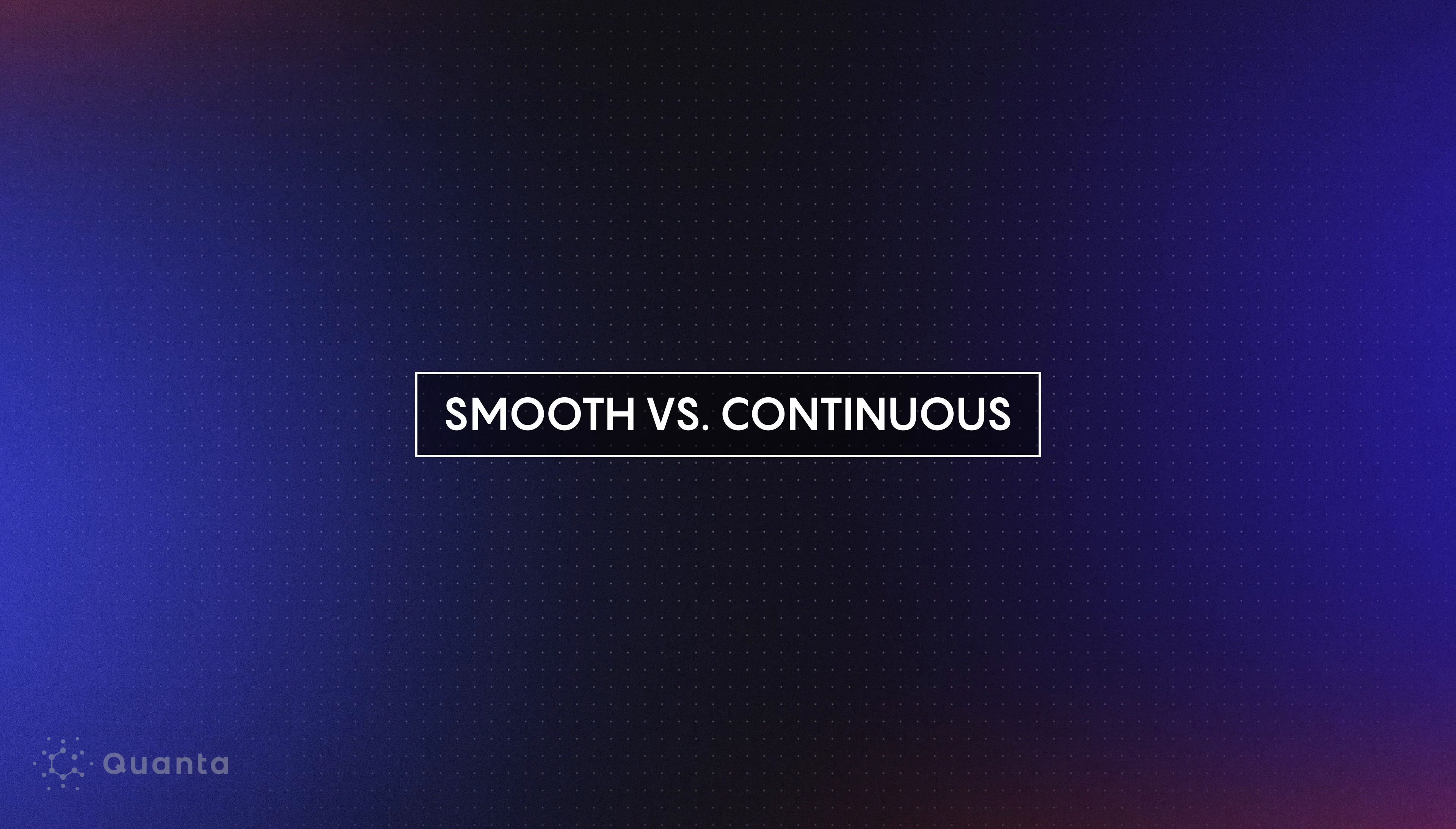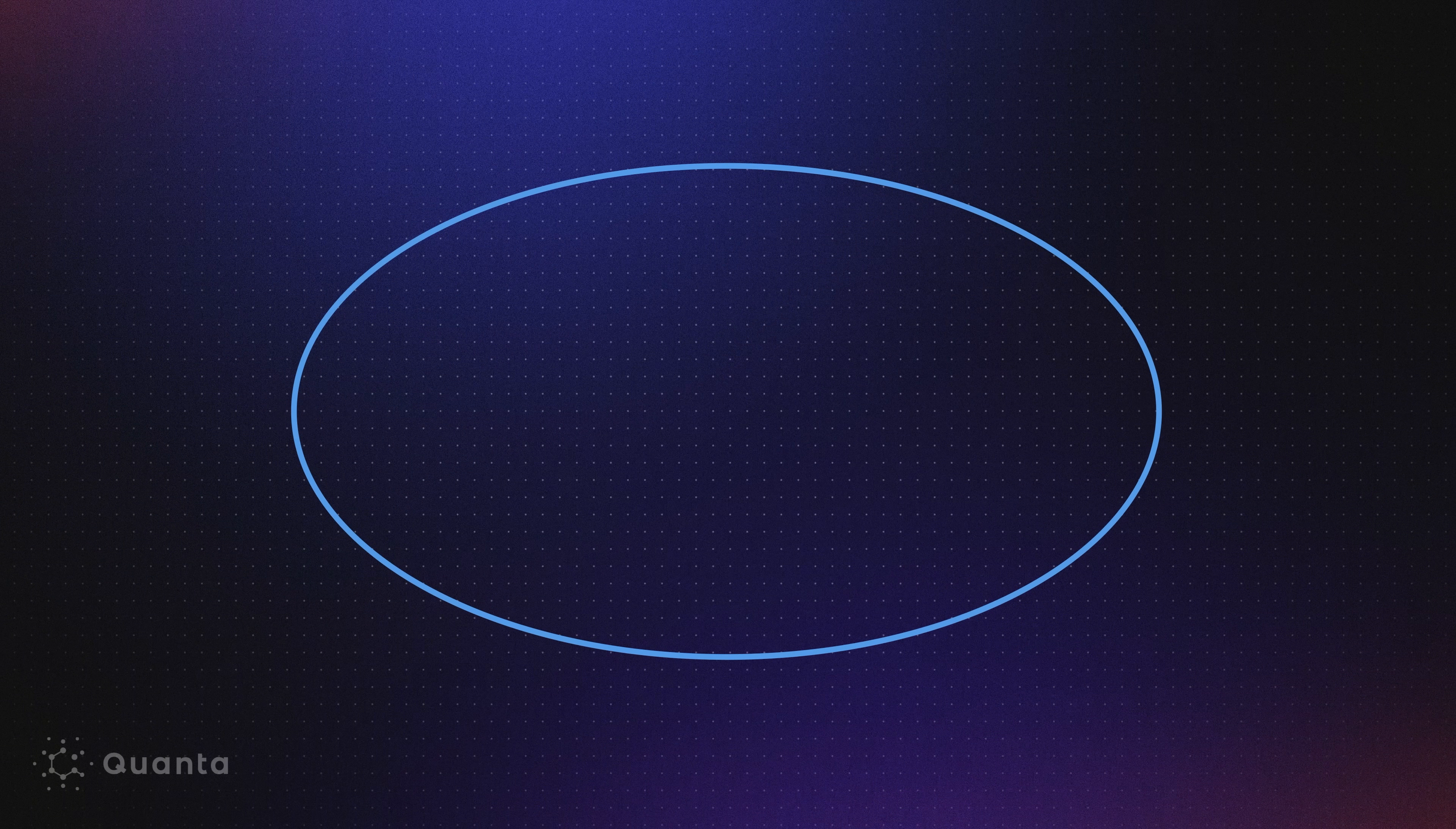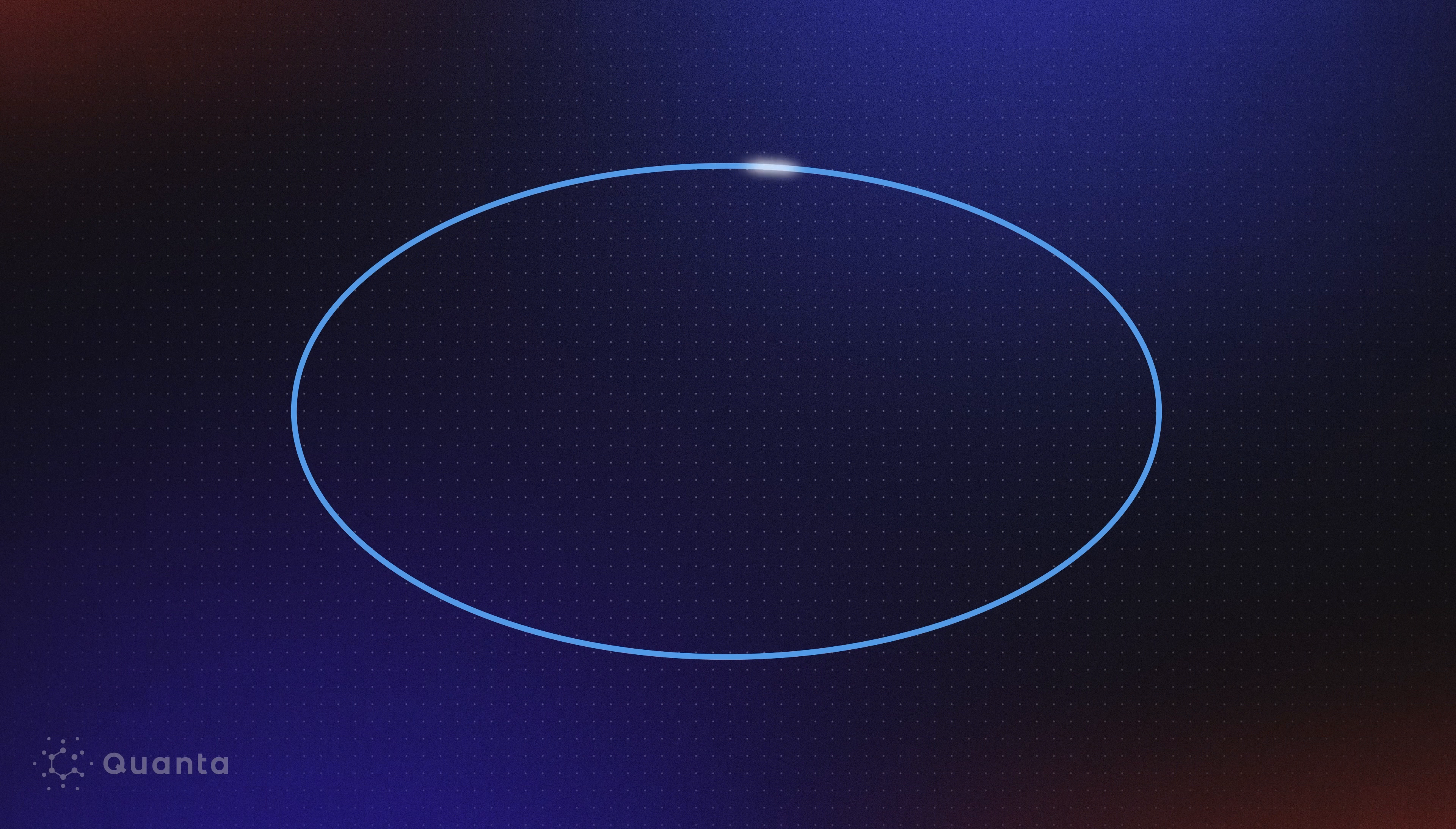The difference between smooth and continuous equivalence is easiest to imagine in really low dimensions. Think about a circle. A circle is smoothly equivalent to an oval. We can stretch the circle, just grab the sides and pull it so it's not as symmetric anymore, it's an oval. But at no point do I ever stop the circle from being a nice smooth curve. It just gets longer.